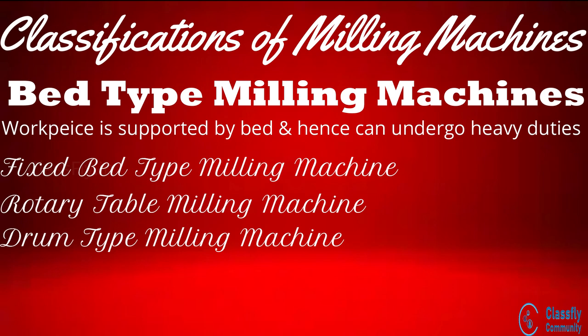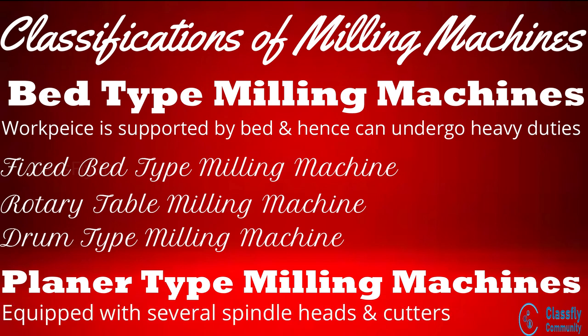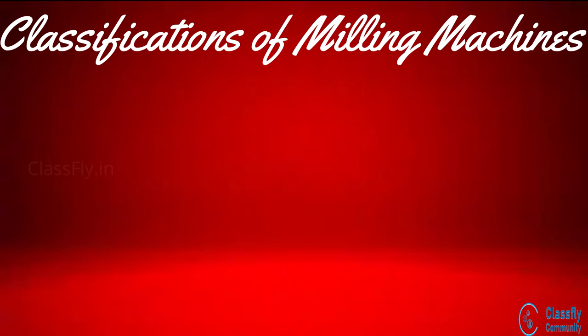The third type is the planar type milling machine. These machines are similar to that of the bed type machines and are used for large and heavy work. They are equipped with several spindle heads and cutters for machining various surfaces with a single setup.